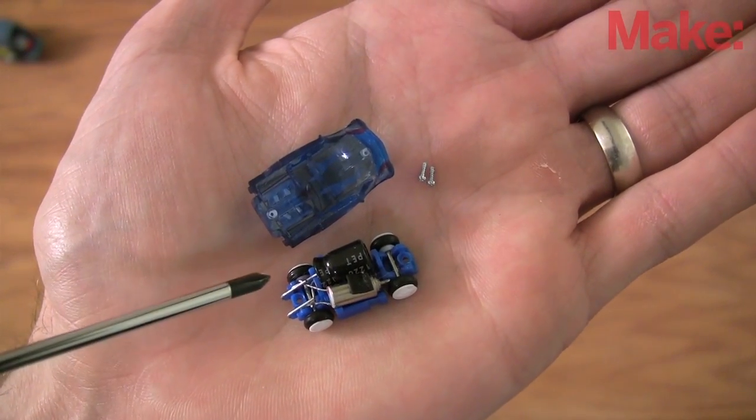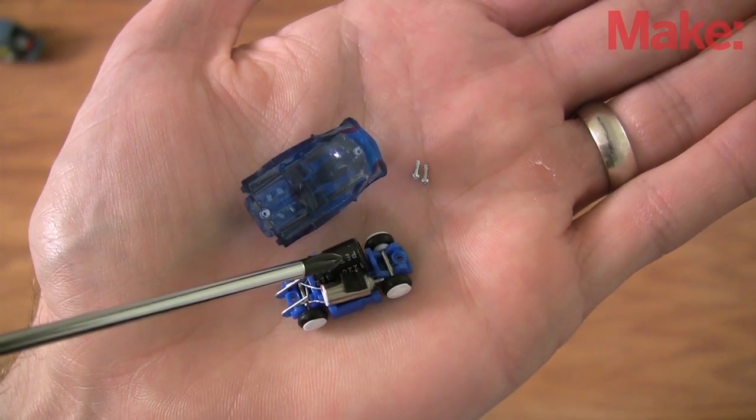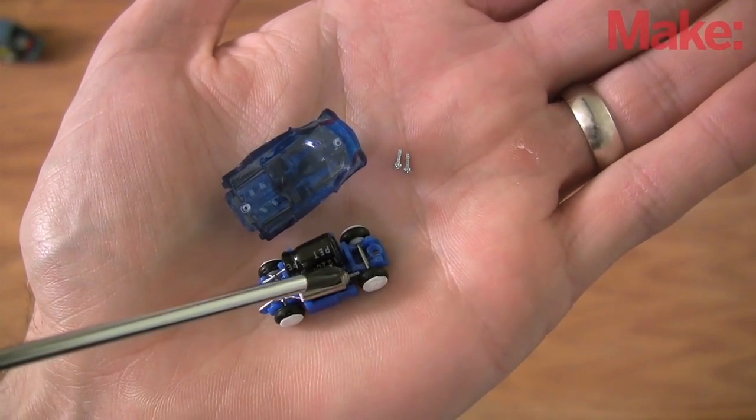Looking inside the car, we see the probes that make connection with the charger, the capacitor that stores the electricity, and the tiny motor that powers the car.